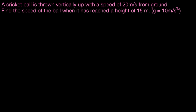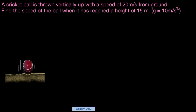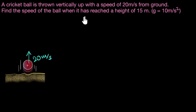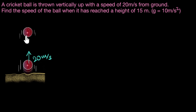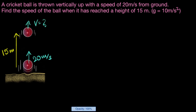Let's draw the situation. We are given that a ball is thrown up from the ground with a speed of 20 meters per second. We are asked to find the speed of the ball when it has reached a height of 15 meters — what's its speed when it is somewhere up here at a height of 15 meters.